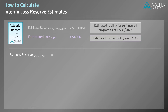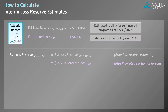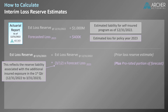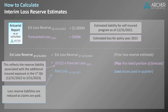Loss reserves as of 3/31/2023 can be estimated by starting with the prior loss reserves — that is, loss reserves as of 12/31/2022. To this amount we add three-twelfths of the forecasted 2023 loss amount. The three-twelfths is the pro rata factor reflecting the portion of the forecasted loss attributable to the period between 12/31/2022 and 3/31/2023 — in other words, the first quarter of 2023. This amount reflects the reserve liability associated with the additional insured exposure in Q1 2023. Next, we subtract losses paid in the first quarter of 2023, since loss reserve liabilities are reduced as claims are paid.